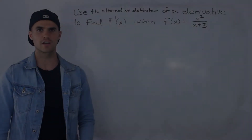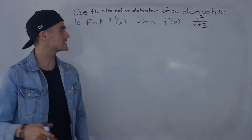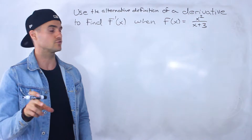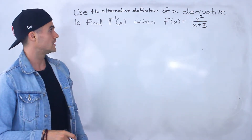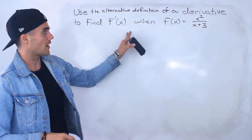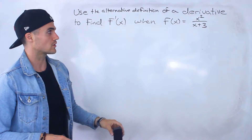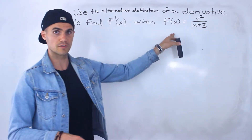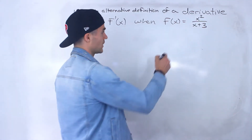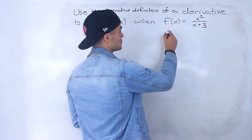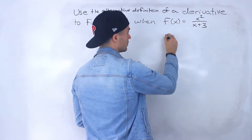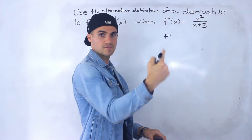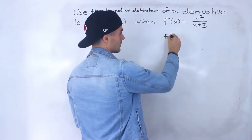Welcome back everyone. Patrick here. In this question we need to use the alternative definition of a derivative to find f prime of x when the function is x squared over x plus 3. We already found the derivative of this using the original definition, and now we're going to use the alternative definition.